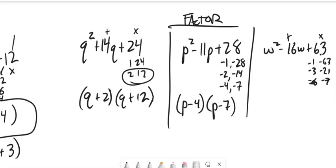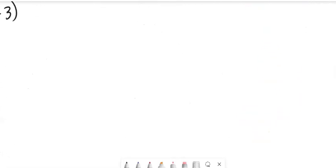I broke the 21 up into 3 times 7. 3 times 3 is 9, so 9 and 7 adds to negative 16. So w minus 9, w minus 7.